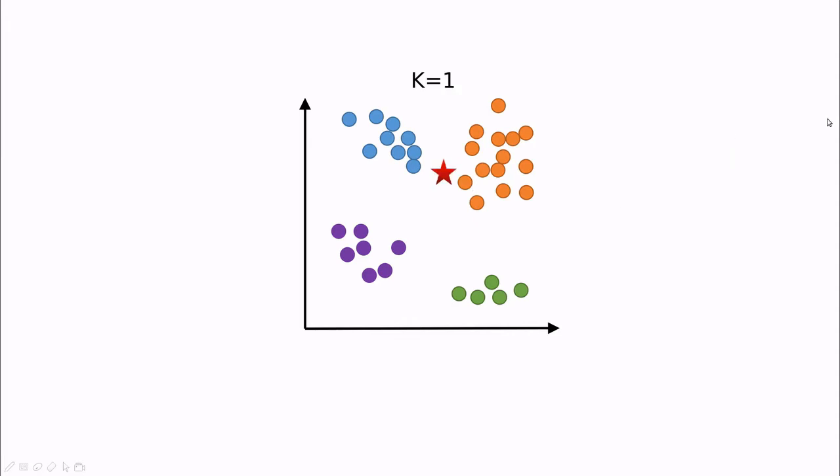Again, let's go back to k equals 1. In this case, again, the closest is this one. So now this observation is going to be orange. But if we change the k, for instance, k equals 3.